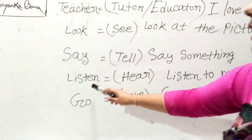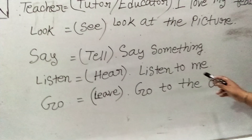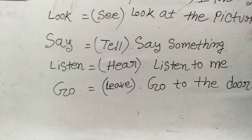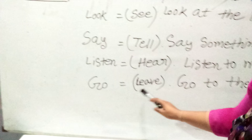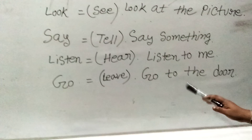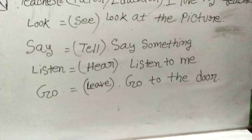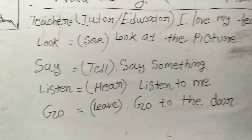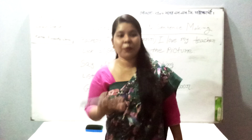The fourth word is 'listen.' Listen means to hear. A sentence with this word: 'Listen to me,' 'Listen to your teacher,' or 'Listen to your parents.' The fifth word is 'go.' Go means to move. A sentence with go: 'Go to the door,' 'Go to your school,' 'Go to your home,' or 'Go to the playground' — whatever you want, you can write.